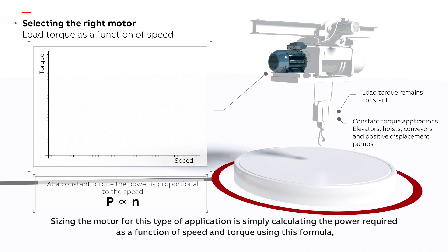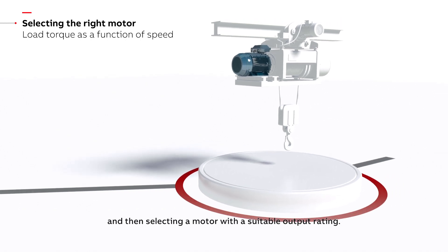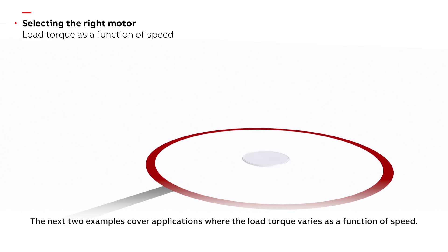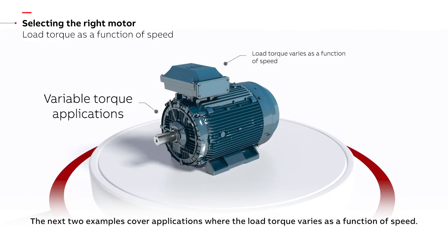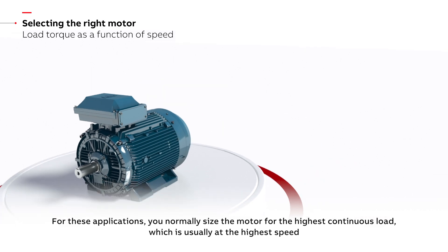Sizing the motor for this type of application is simply calculating the power required as a function of speed and torque using this formula, and then selecting a motor with a suitable output rating. The next two examples cover applications where the load torque varies as a function of speed. For these applications you normally size the motor for the highest continuous load, which is usually at the highest speed.